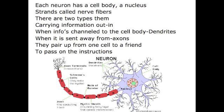Each neuron has a cell body, a nucleus, and strands called nerve fibers. There are two types of them carrying information: dendrites, which channel info to the cell body, and axons, which send it away from the cell. They pass from one cell to the next to pass on the instructions.